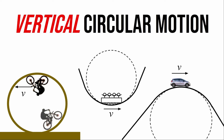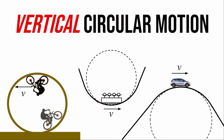This video is going to help you think about what's going on with objects involved in vertical circular motion. They're following a curved path that happens to be vertical, not horizontal. For example, a mountain biker going through a vertical loop, or a roller coaster at the bottom of a hill, or a car cresting a hill — all following part of a circular curved path. In this video we'll think about the forces involved in these types of situations.